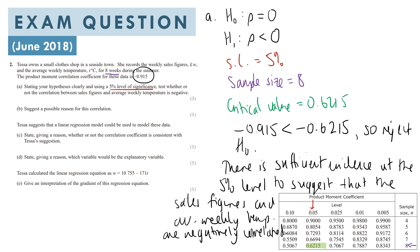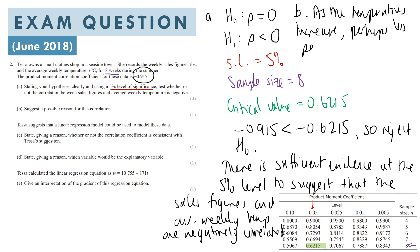For part B, we're asked to suggest a possible reason for the correlation. The negative correlation shows that as average weekly temperatures increase, sales figures for the clothes shop decrease. We can say that as temperatures increase, perhaps fewer people will be in shops and instead on the beach.